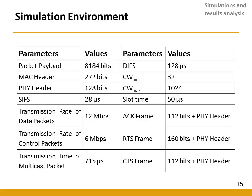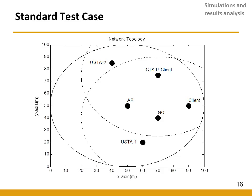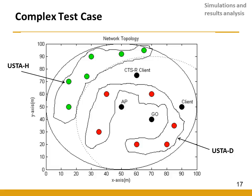We developed a time-based simulator in MATLAB using MAC and PHY parameters shown in the table. We developed two test cases: a standard test case with one AP, one group owner, two clients, and two unicast stations, where unicast station 2 is a hidden node to the group owner; and a complex test case with the same setup but increasing the number of unicast stations from 2 to 12, where green unicast stations are hidden nodes to the group owner and red ones are in the group owner's transmission range.